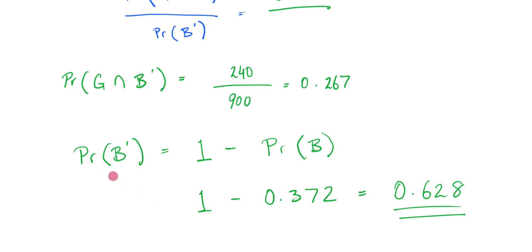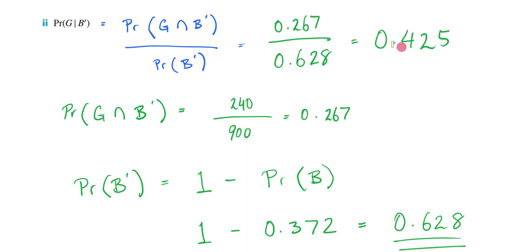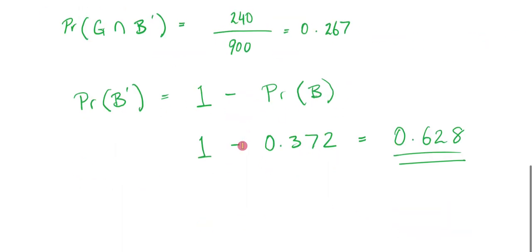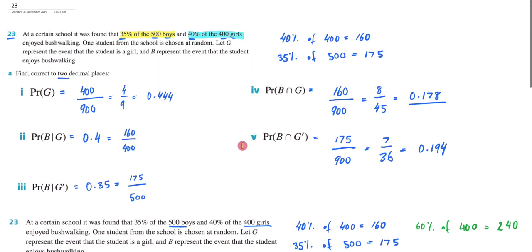And that's the probability of people who don't enjoy bushwalking. So in this spot I'm going to put 0.628. Then going 0.267 divided by 0.628 equals 0.425. That is the answer in the back of the book. As you can see, this one was a bit longer than most questions — that's why I broke it up. Hopefully this has answered all your questions about question 23.